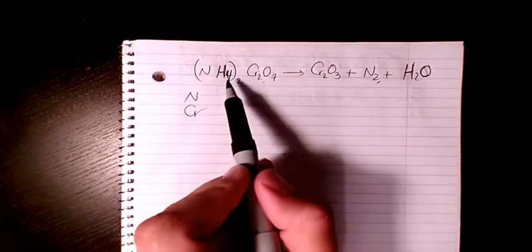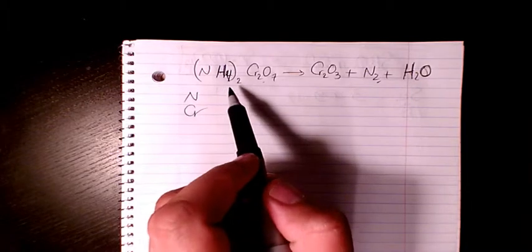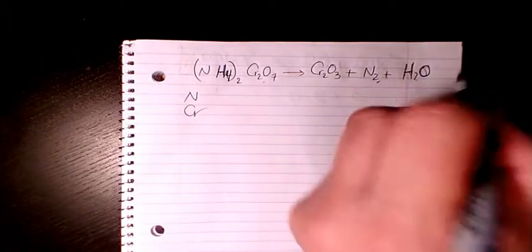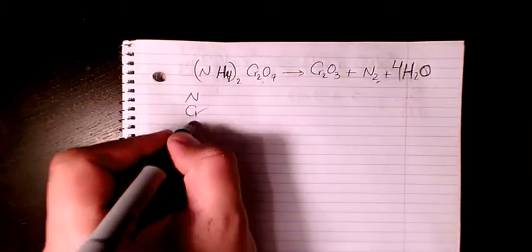What about hydrogen? Hydrogen, we have four times two, eight on the reactant side, and the products, we have just two. So four, four times two is going to be balanced.